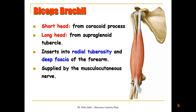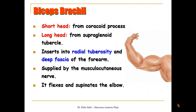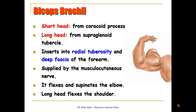It is supplied, as the rest of the front muscles, by the musculocutaneous nerve, and it is a flexor and a supinator of the elbow joint. Also, its long head, since it passes over the shoulder joint, helps in its flexion.